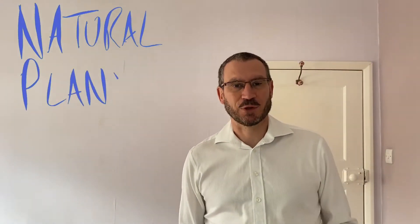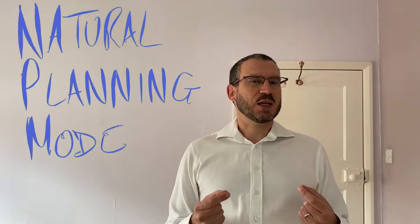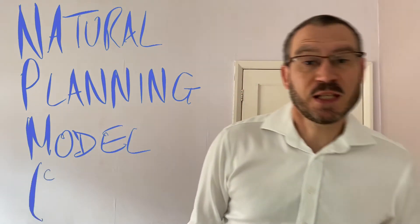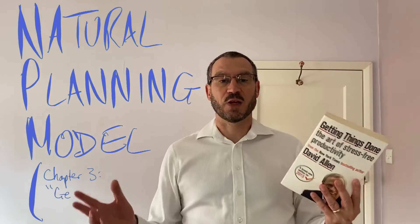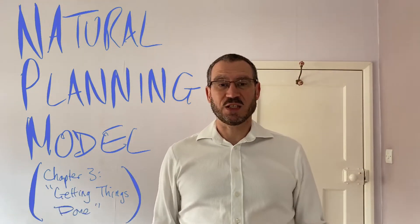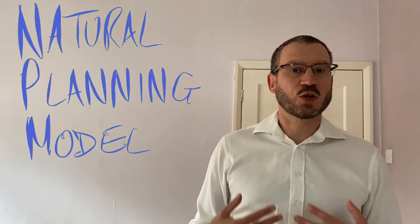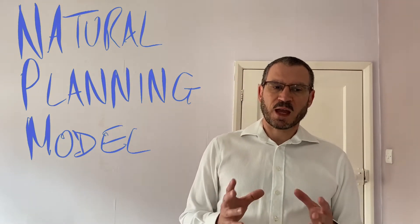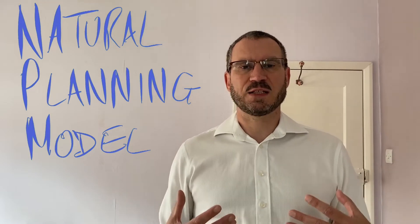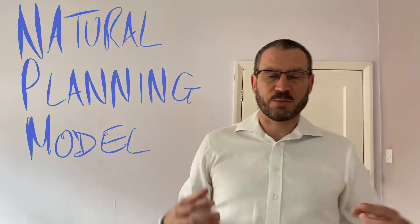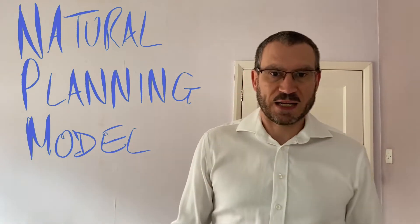Hello, today I'd like to talk about the natural planning model. The natural planning model is kind of an unsung hero of the Getting Things Done methodology. It's in the book — chapter three — a whole chapter about the natural planning model. But actually quite a lot of people who practise GTD don't know about it or don't remember it, and I think that's partly because it's not really directly related to the practice of lists and organisation and getting things done that GTD is mainly about.